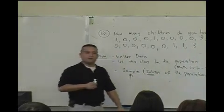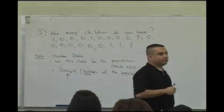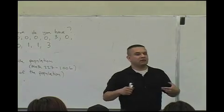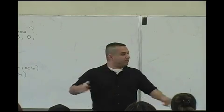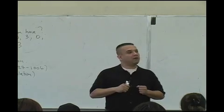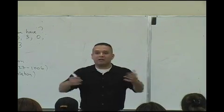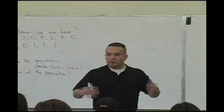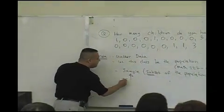But this sample that I just took was not random. Anybody know anything about this? What happened? I just took the first two rows. I just asked people in the first two rows. The people in the back probably felt left out. The people on the sides probably felt left out. Why did I only ask people in the first two rows? Exactly, it was convenient for me. It was just convenient.